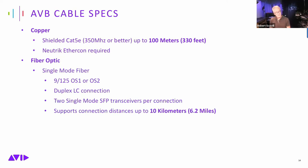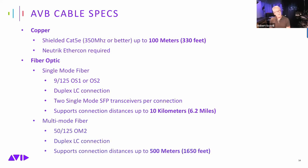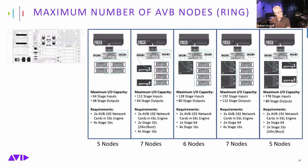For fiber optic: single-mode fiber (9/125 OS1 or OS2) uses a duplex LC connection with two single-mode SFP transceivers, supporting connections up to 6.2 miles. Multi-mode fiber supports up to 500 meters (1,650 feet), which still fits most workflows. Follow these specs and you'll have a great experience with AVB.